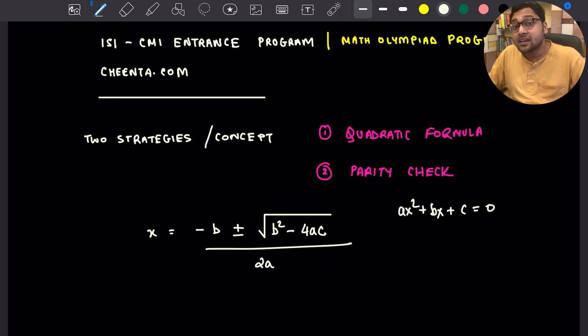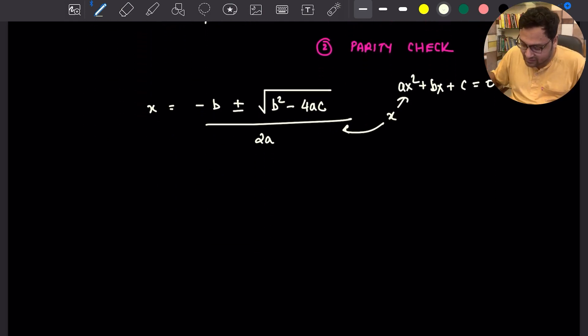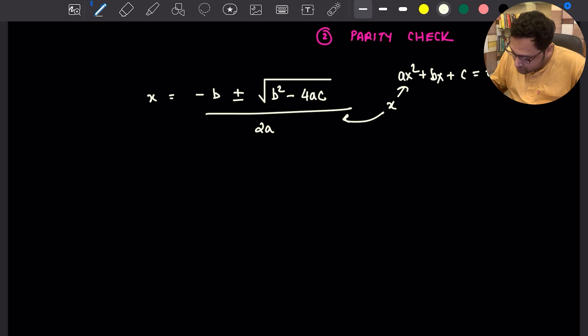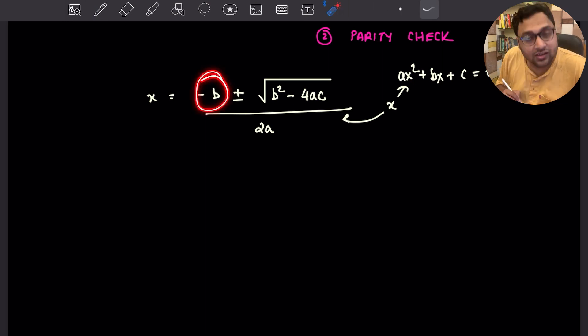What do I mean by roots? Roots means if you plug in the value of x, if you replace x in this equation by this expression, then the left hand side would become 0. If you look at this expression very carefully, you will see that this is an integer because all A, B, C are odd integers.